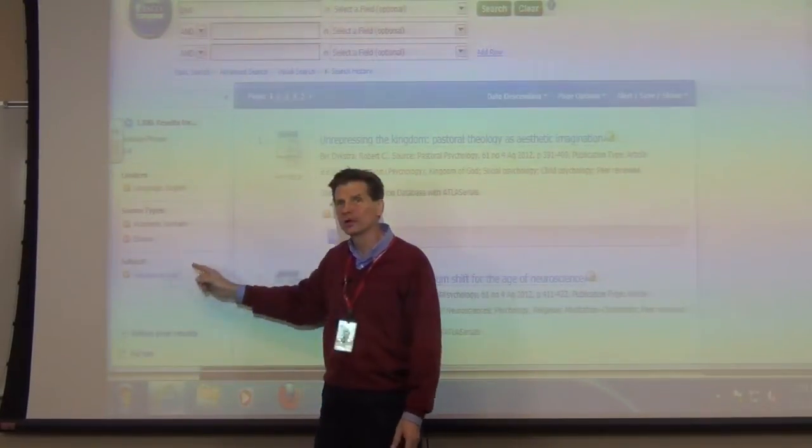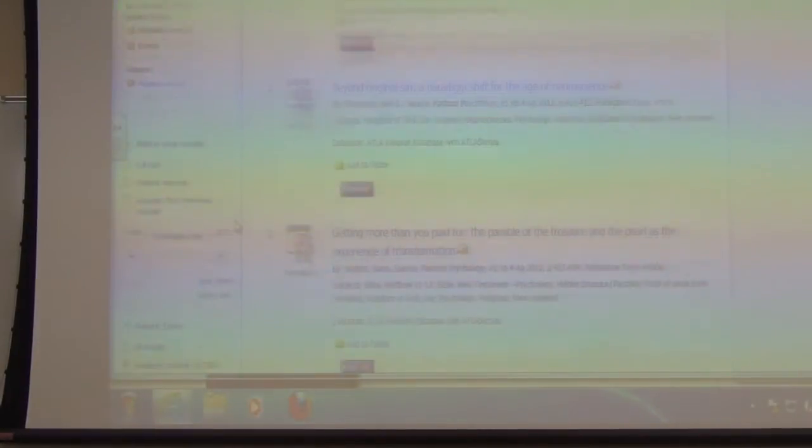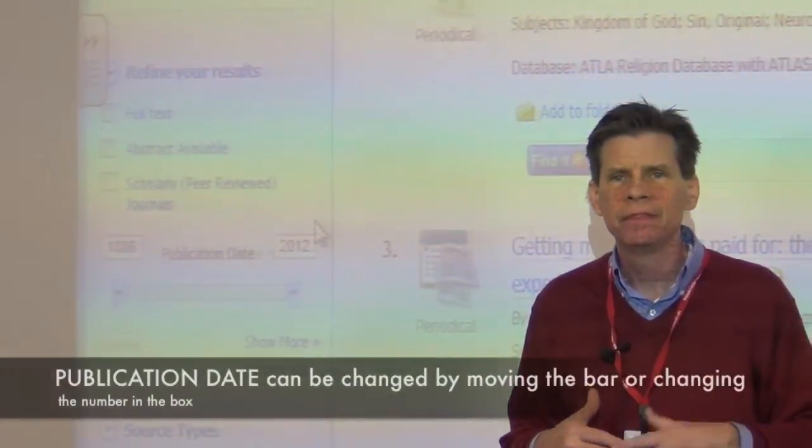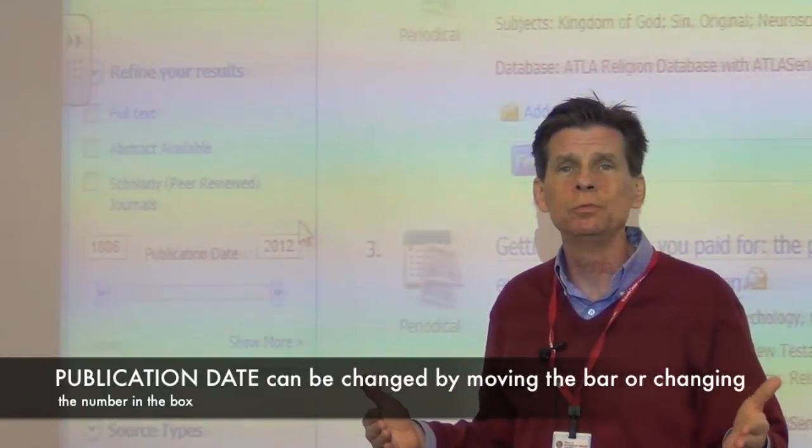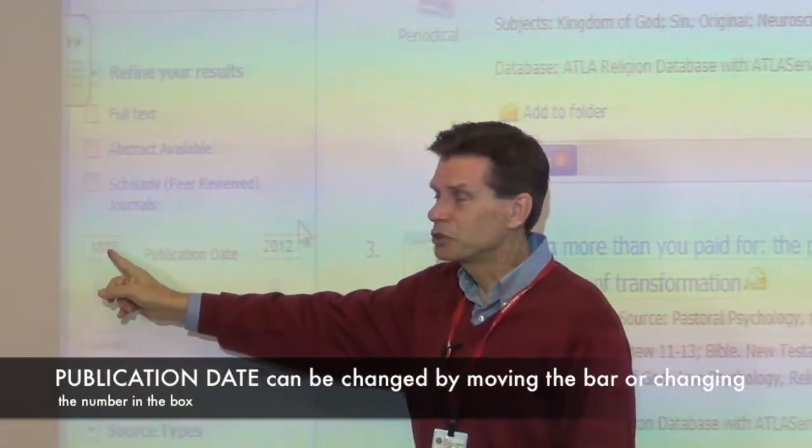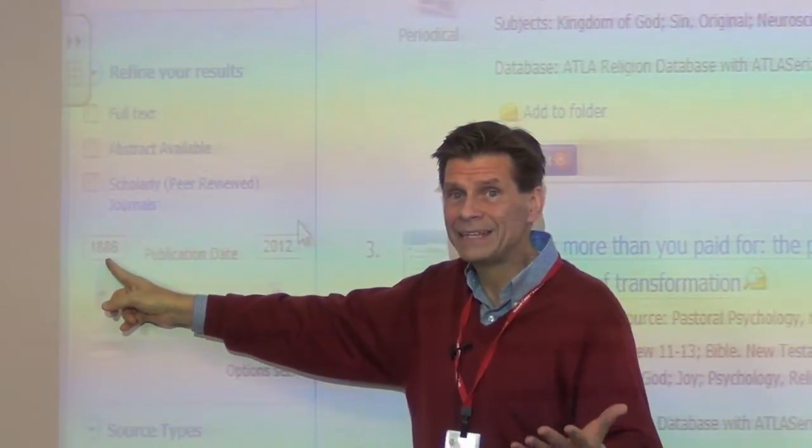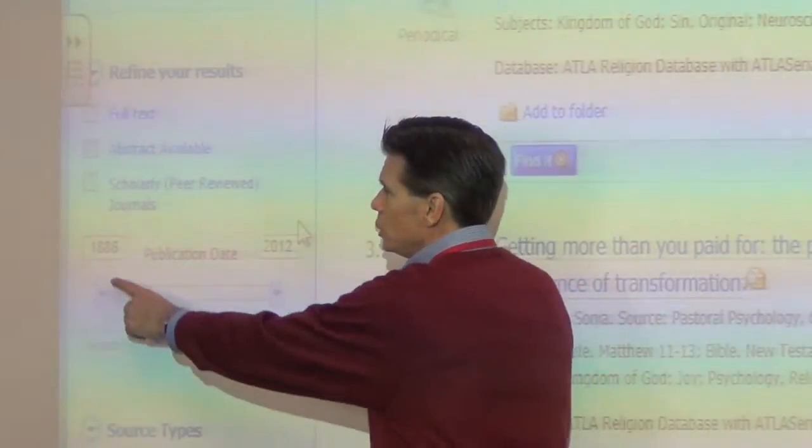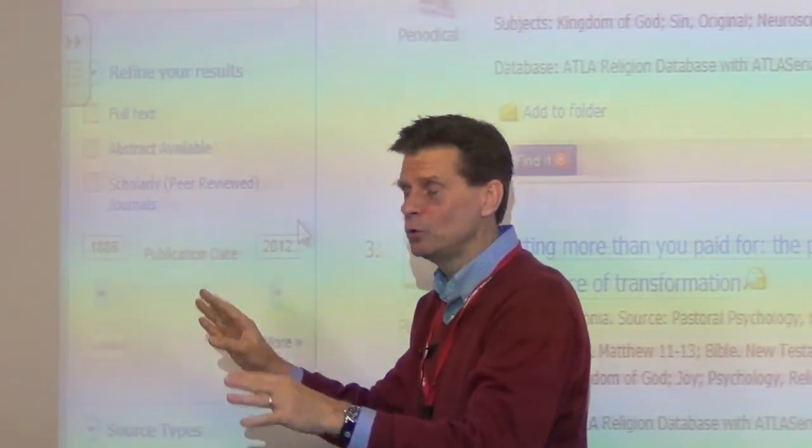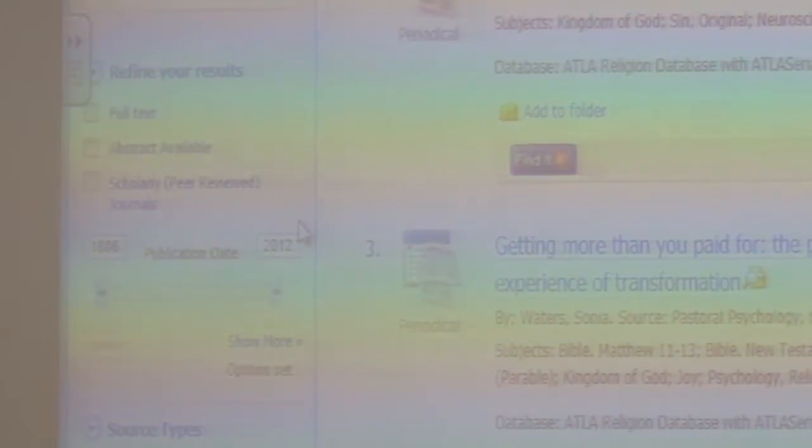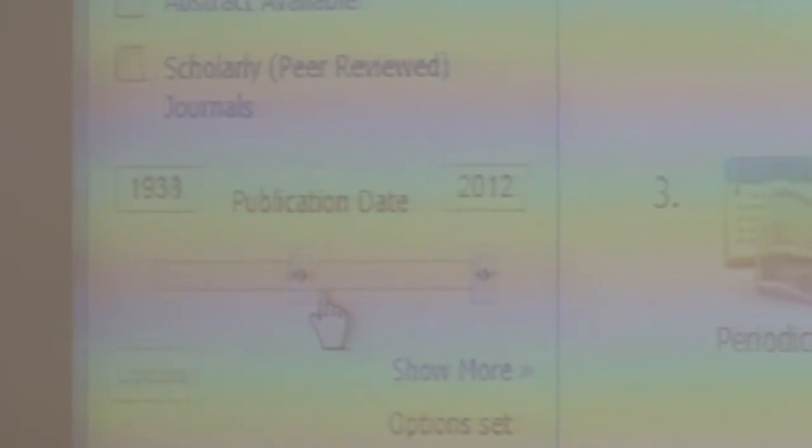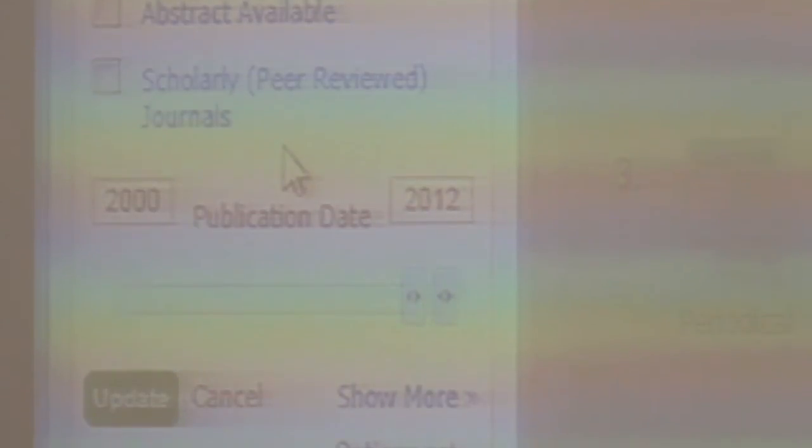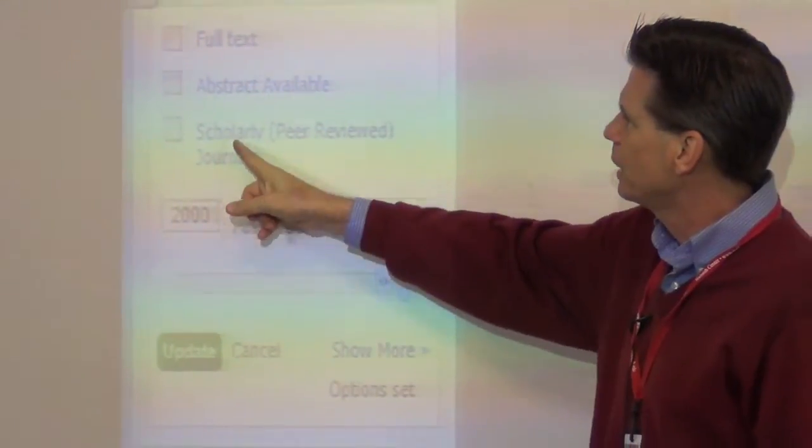Now we have the limiters in our search. We have English, kingdom of God, and just academic journals and essays. But there's more. If you scroll down the left-hand side, your professor might say, 'I just want up-to-date material, not old stuff. I want things from the new millennium.' Look here—we have publication date. The computer has found at least one from 1886 and at least one from 2012. We're going to change that to 2000. You can highlight and put in the number or move the bars, which will move the numbers.